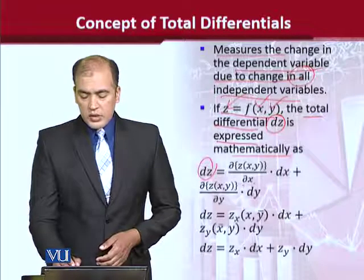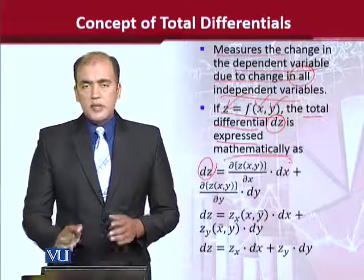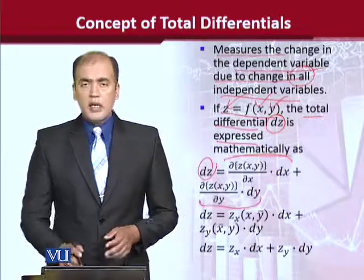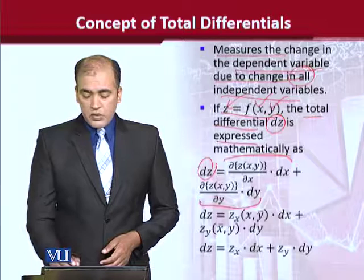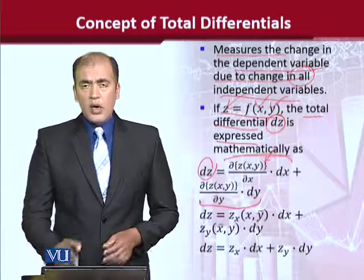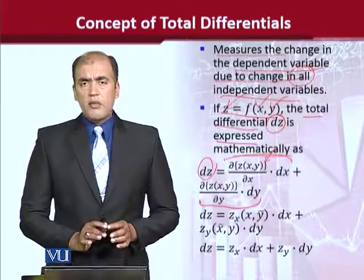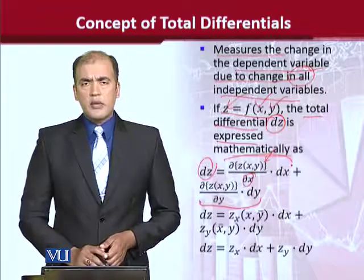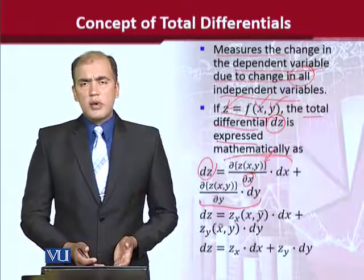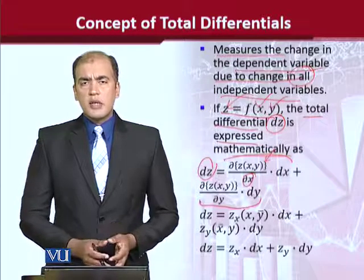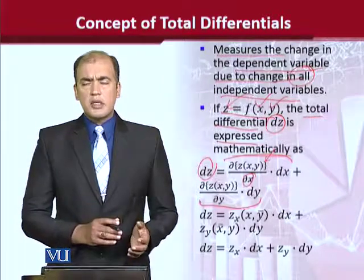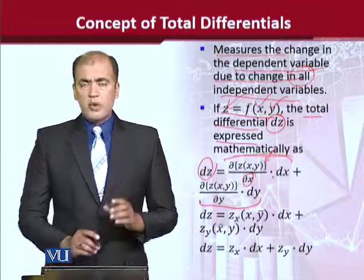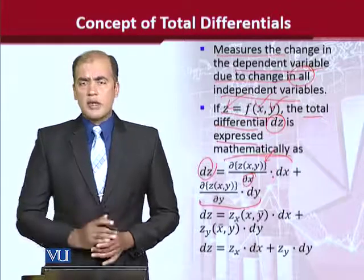dz is equal to — so there are two parts of it. We take the partial differentiation with respect to the first variable, which is x, and multiply by dx. This dx should not come as a surprise, because when we have differentials, the denominator comes from the left hand side to the right hand side. So in this case dx, from that analogy, will come to the right hand side. Similarly,